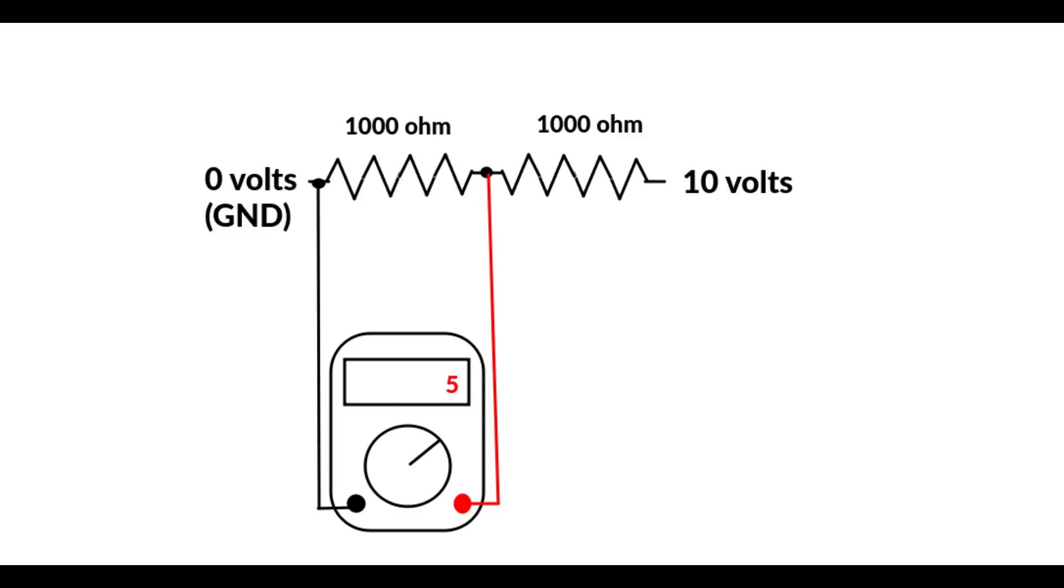You get the number 5 volts because whatever voltage you're going to read is going to depend on the ratio between the two resistances. So if you were to change the resistor on the right to 2000 ohms or add another 1000 ohm resistor in series, what you would end up with is one third of the voltage or 3.3 volts.